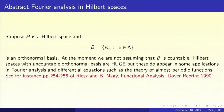Let us go to the next topic within module 7: abstract Fourier analysis in Hilbert spaces. So far we have been looking at concrete examples of bases in Hilbert spaces. We took L2 of [-1,1] and produced the Legendre polynomials. We took L2 of [0,∞) and got the Laguerre functions. We took L2 of the real line and got the Hermite functions. These are classical examples of complete orthonormal systems in three important Hilbert spaces.